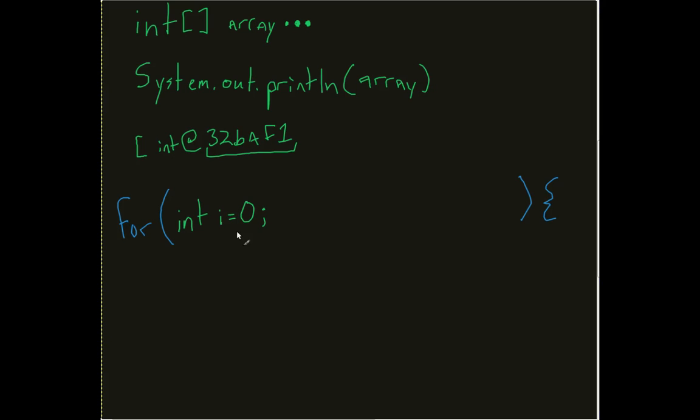Then the next section is my conditional, which is saying if i is less than array, because that's the name of my variable, dot length, which is going to tell me however big my array is.